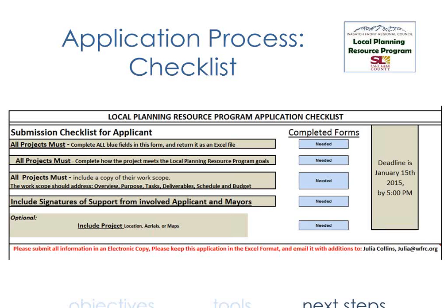There's some additional supplemental material you could include — aerial photographs, maps delineating the project area. These do not count toward the page maximum. Also, please submit the application as an electronic copy in Excel format. This helps us immensely — we cut and paste information into a more malleable format for evaluation, so please avoid converting it to a PDF.